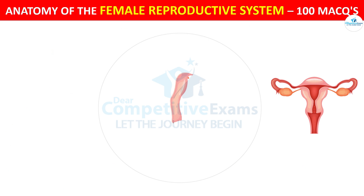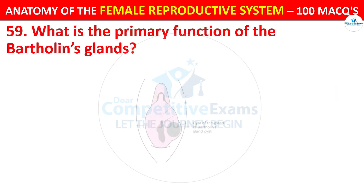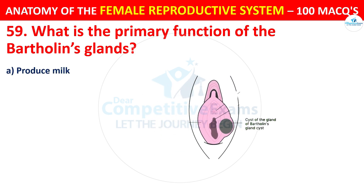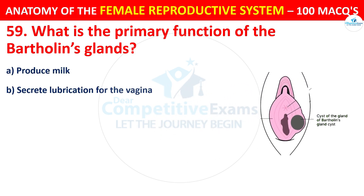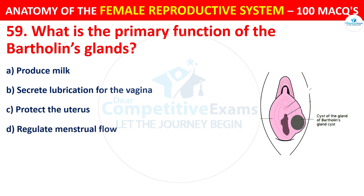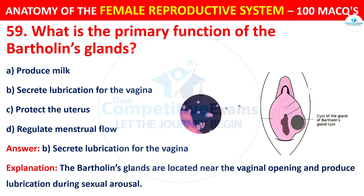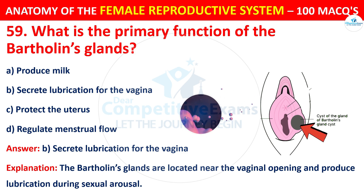Question number 59. What is the primary function of the Bartholin's gland? Options: produce milk, secrete lubrication for the vagina, protect the uterus, or regulate menstrual flow. The correct answer is B — secrete lubrication for the vagina. The Bartholin's glands are located near the vaginal opening and produce lubrication during sexual arousal.